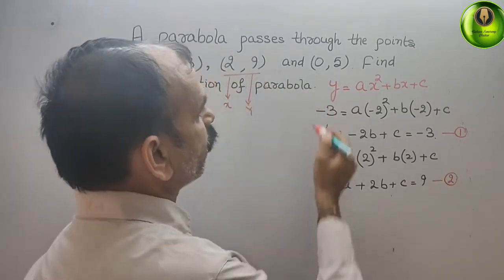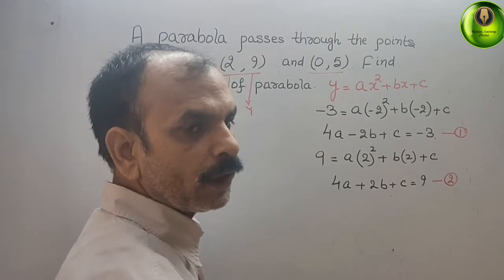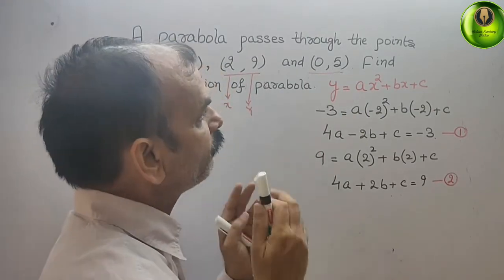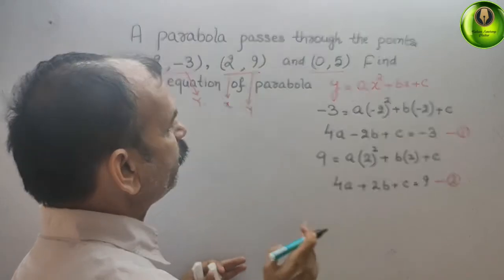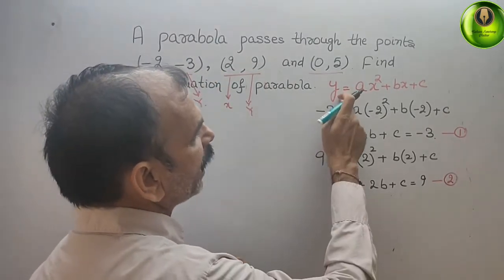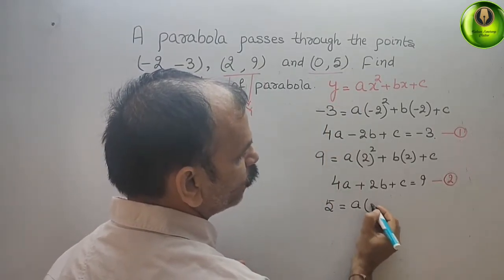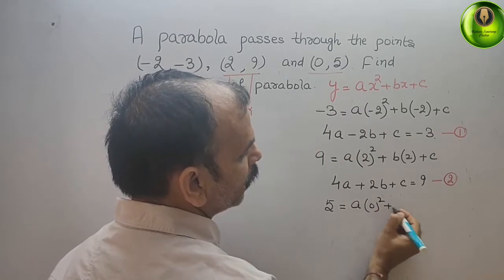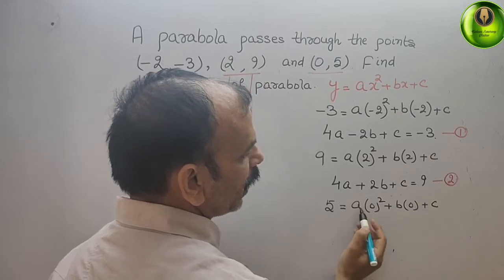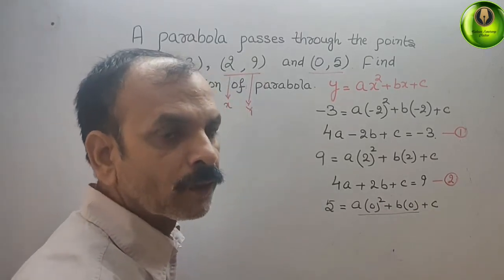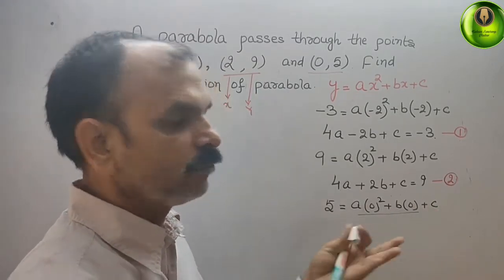Go for the third coordinate: (0, 5). Here, 0 is your x and 5 is your y. Substituting: 5 = a(0)² + b(0) + c. Since 0 into any number gives 0, this simplifies to c = 5.